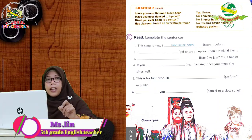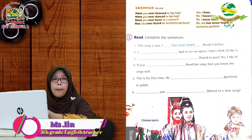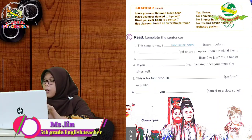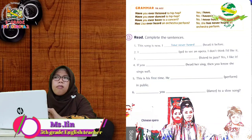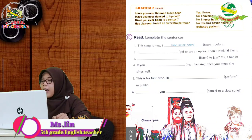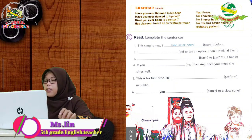Number two: Subjeknya adalah I, berarti menggunakan have. Verb dalam kurung adalah 'go' — bentuk ketiganya adalah 'gone'. 'To see an opera, I don't think I'd like it.' Karena belum pernah, berarti gunakan never. Jawaban: 'I have never gone to see an opera. I don't think I'd like it.'